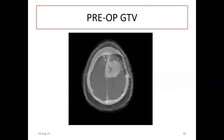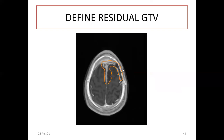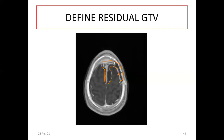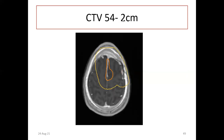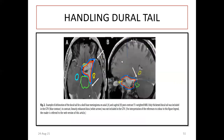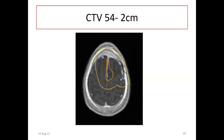Here I am presenting a case: this is the pre-op GTV and this is the post-op GTV. There is a small round enhancing part defining the residual GTV — this is the residual GTV. Then CTB 54 is 2 cm margin, CTB 60 is 1 cm margin. Remember, this is the residual GTV and this is the hyperostasis area, which you have to include using bone window. This is CTB 54 at 2 cm and CTB 60 at 1 cm.